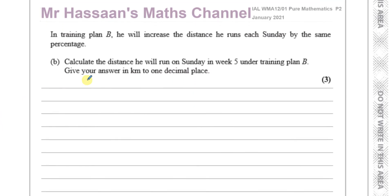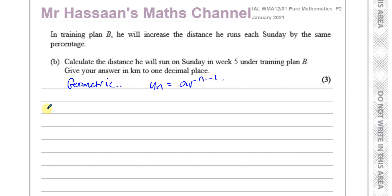Now for part B. In training plan B, he will increase the distance he runs every Sunday by the same percentage. So now this is a geometric sequence — you're multiplying by the same amount each time, for example 10% more than the week before. A geometric sequence is given by Uₙ = A × R^(n−1). We know A = 15, and n = 12, so the 12th term is 37.